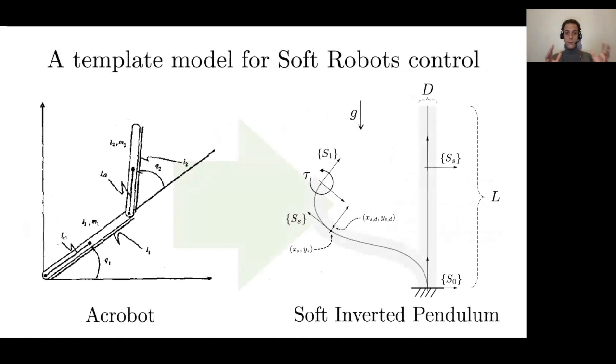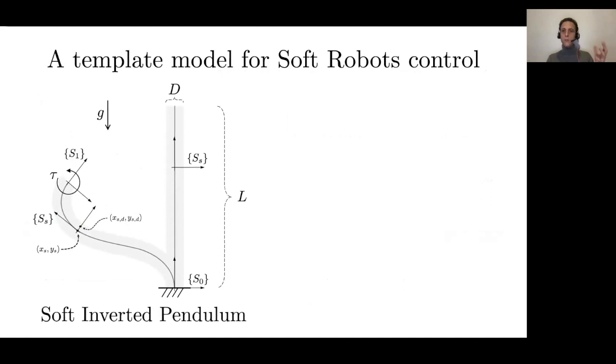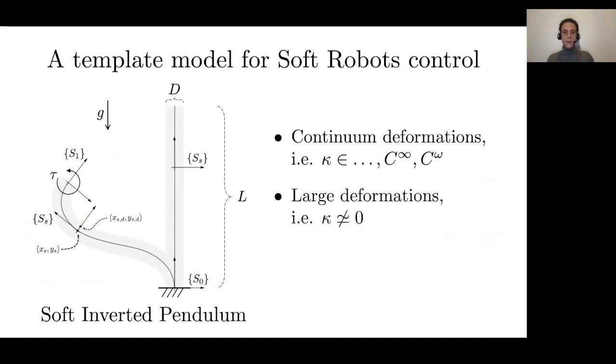Specifically, what we propose here is the so-called soft inverted pendulum with affine curvature. What we want from this model: to undergo continuum deformation so the curvature function has to be some function indeed; second, we want kappa to be possibly high; and last but not least, we want it to be a template model with just two degrees of freedom and one degree of actuation.